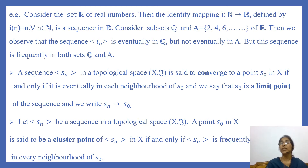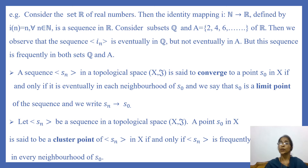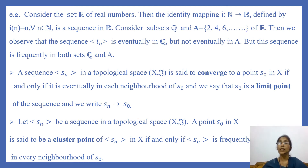But the sequence is not eventually in A, because we cannot find any natural number n_0 such that I(n) belongs to A for all n greater than or equal to n_0. However, we can say the sequence is frequently in A: if m is any odd natural number, then I(m) = m doesn't belong to A, but we can find the natural number m+1, which is even, and so I(m+1) belongs to A. Hence the sequence is frequently in A. Since the sequence is eventually in Q, it is also frequently in Q, so I_n is frequently in both Q and A.